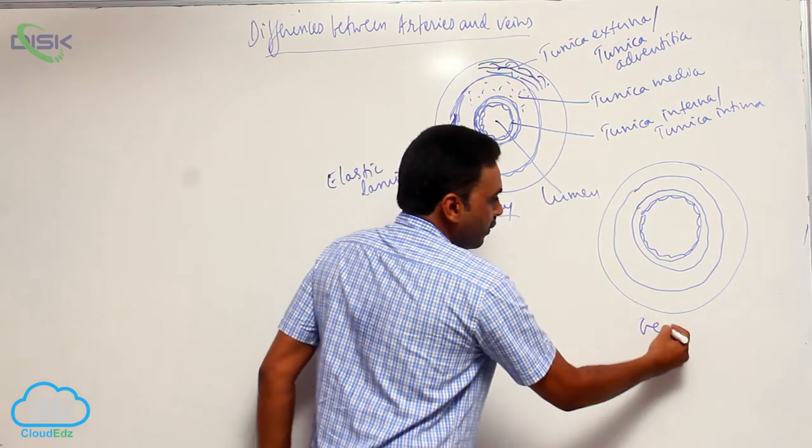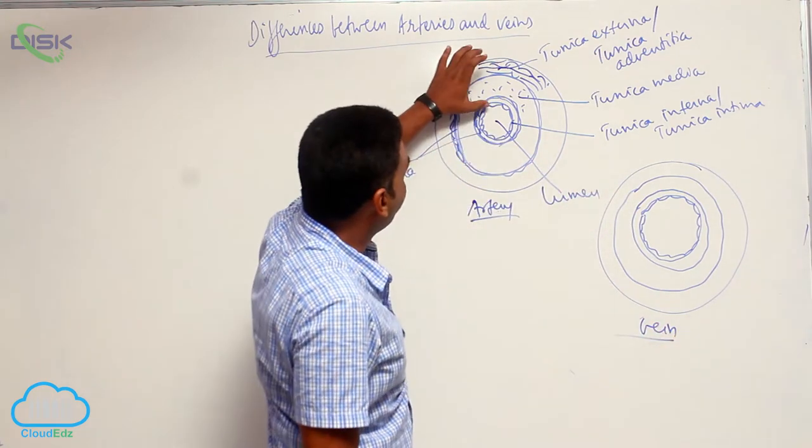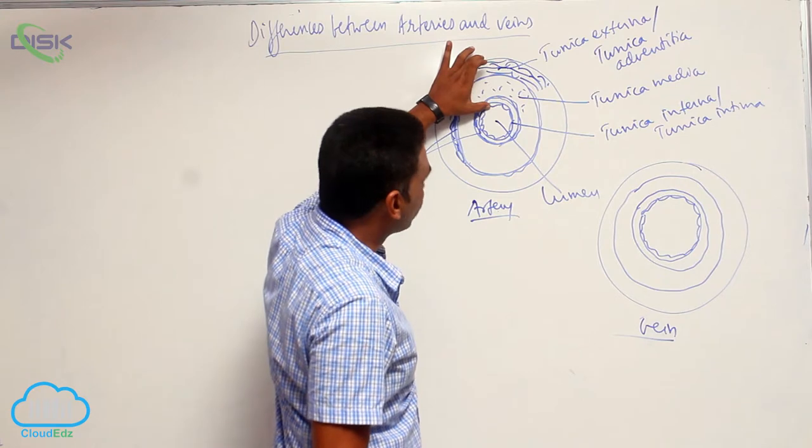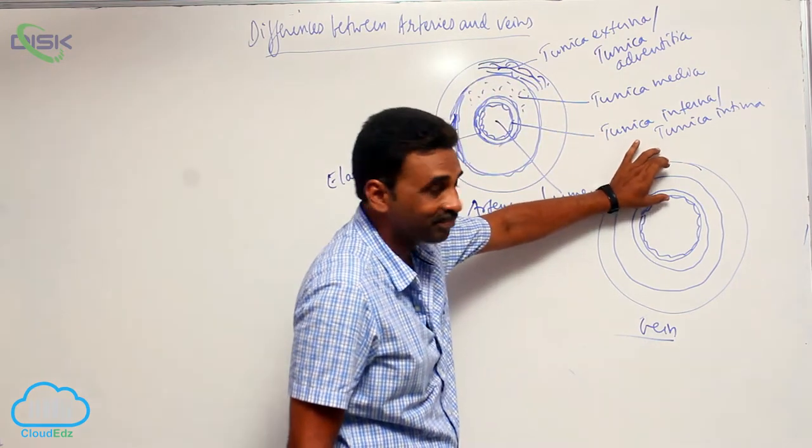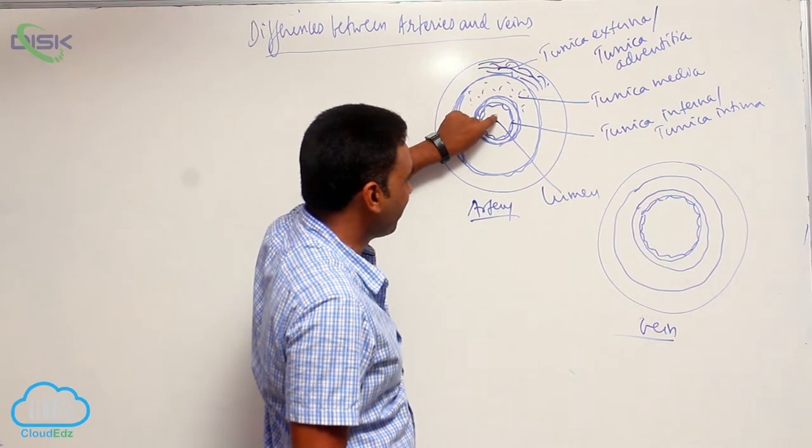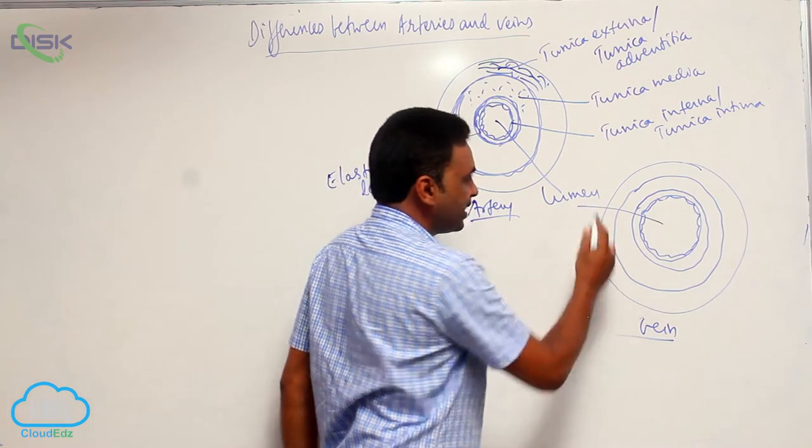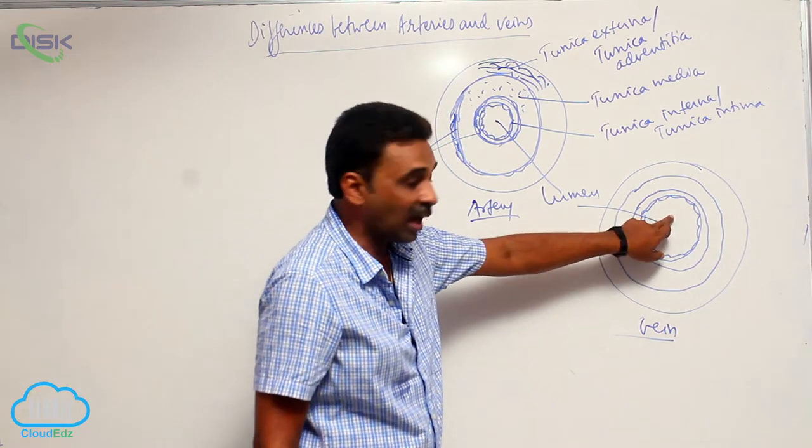And this is a vein. If you see the thickness, here it is more thicker, here it is less thicker. Lumen, here it is having less lumen, here it is having more lumen, larger lumen.